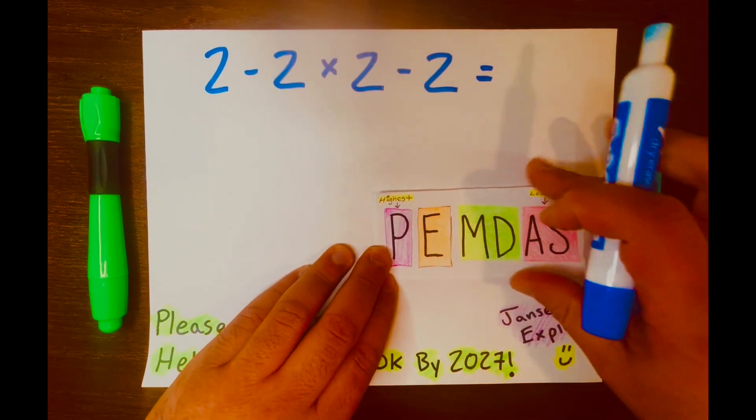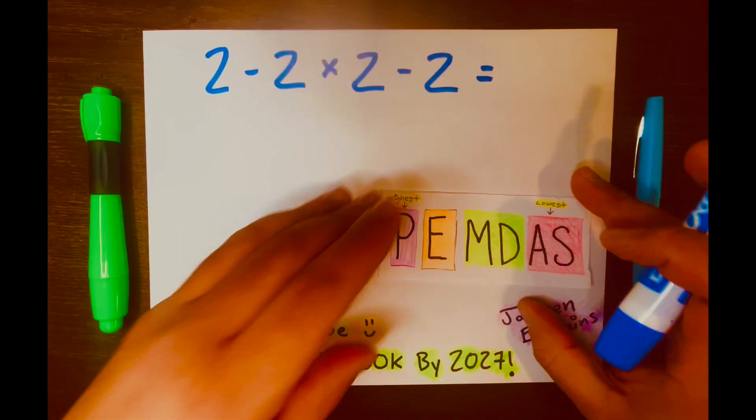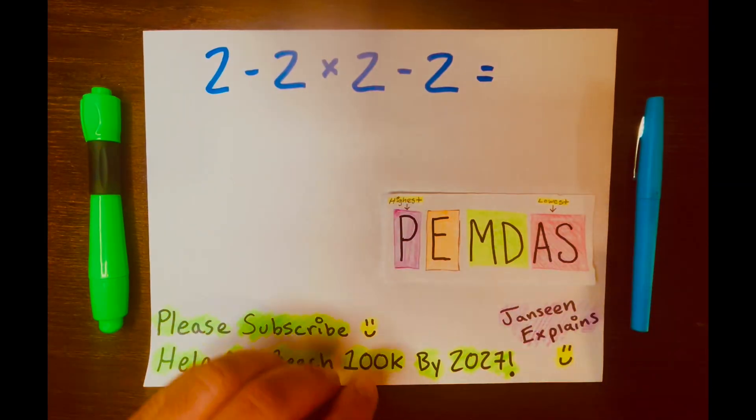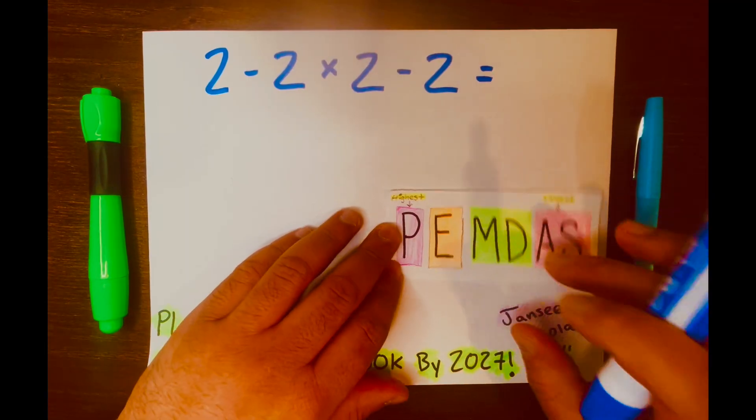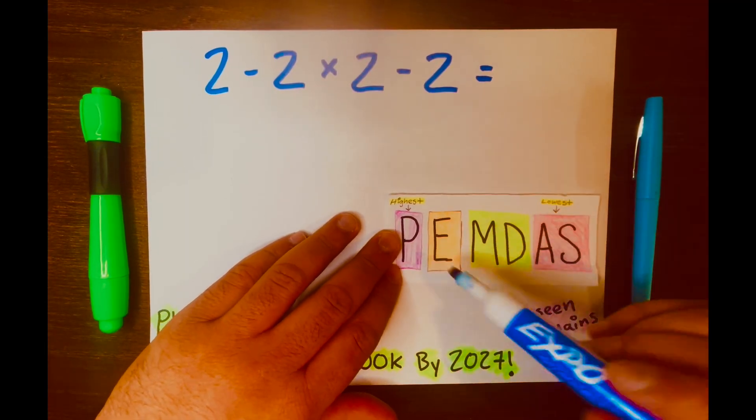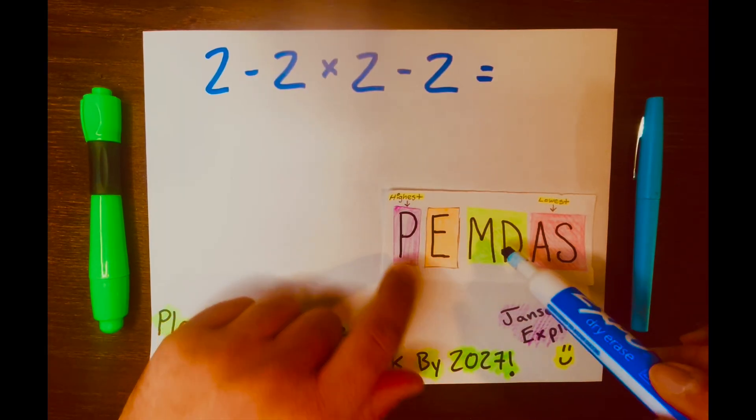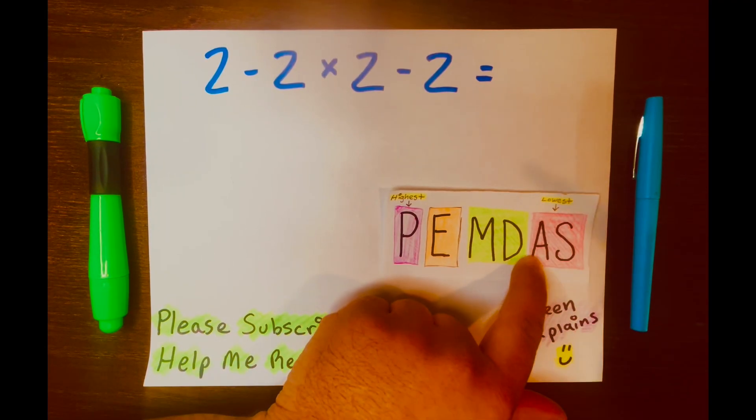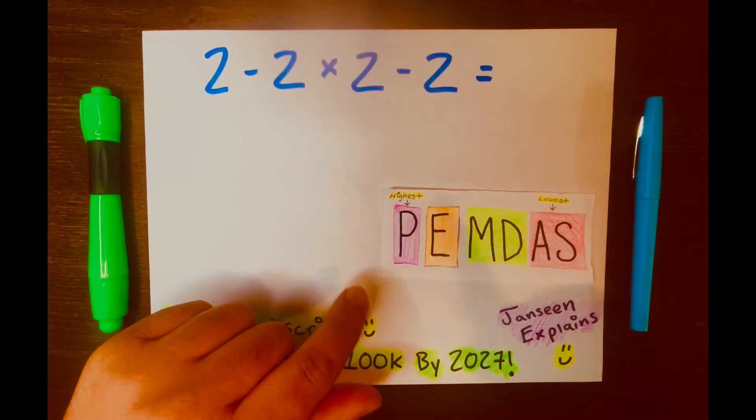And they did not use PAMDAS. PAMDAS is just an acronym to help us with the order of operations. P stands for parentheses, E for exponents, MD for multiplication and division, and lastly, AS for addition and subtraction. And so there are four different levels in PAMDAS.